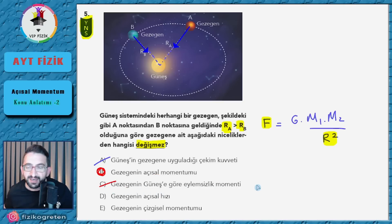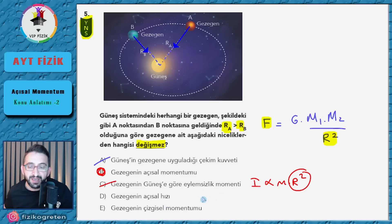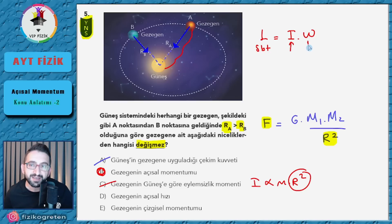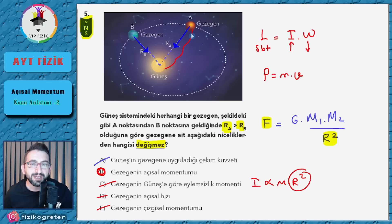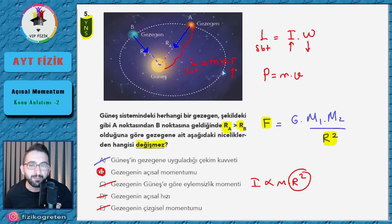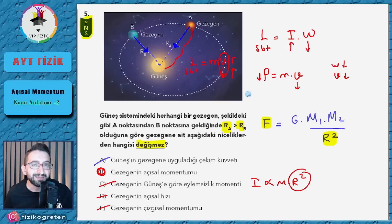Güneşin gezegene uyguladığı çekim kuvveti F = G×M₁×M₂/R² formülüyle hesaplanır; R değişince çekim kuvveti de değişir. Gezegenin eylemsizlik momenti I = M×R² ile orantılı olduğundan R değişince o da değişir. Açsal hız ω da değişir: L = I×ω'da L sabit, I artarsa ω azalır. Çizgisel momentum M×V olduğundan V de değişir; R büyüyünce (L = M×V×R'de L sabit) V küçülür. Sorumuzun cevabı: gezegenin açsal momentumu değişmez.